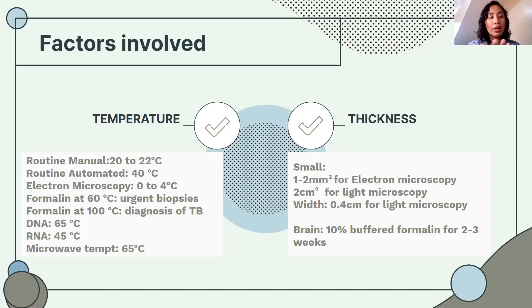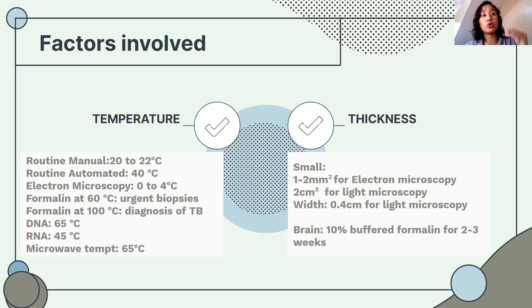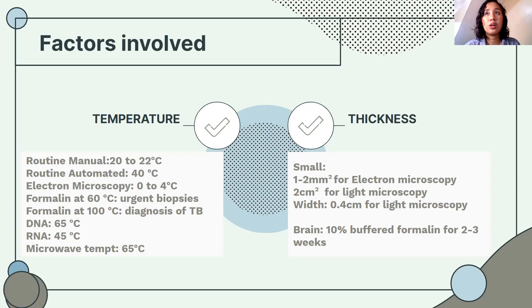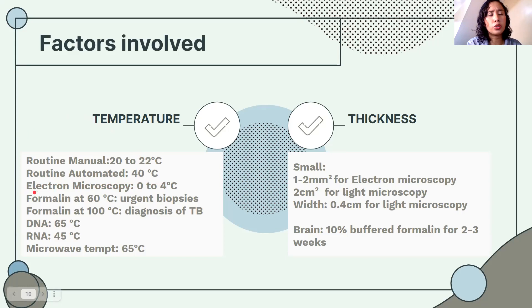However, the disadvantage is that if some parts of the tissue are not well submerged in formalin or not yet exposed, increased temperature can accelerate degradation and putrefaction. For electron microscopy, the temperature should be cold. For urgent biopsies, slightly elevated temperature is needed for rapid fixation. Formalin at 100 degrees Celsius is used for tuberculosis diagnosis; DNA and RNA are fixed at 65 and 45 degrees Celsius respectively.